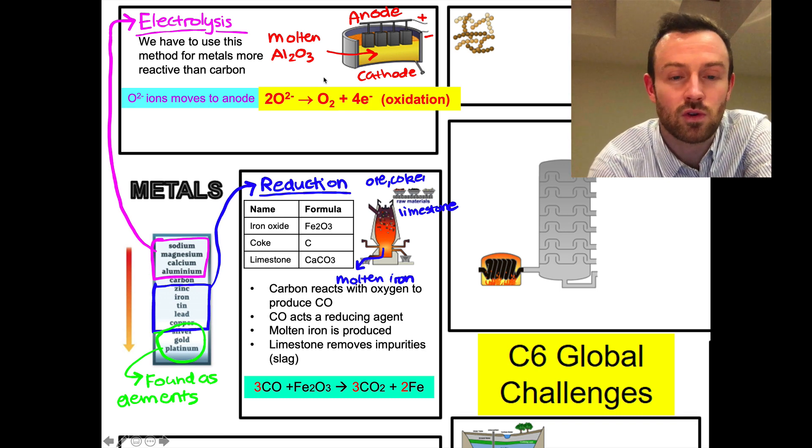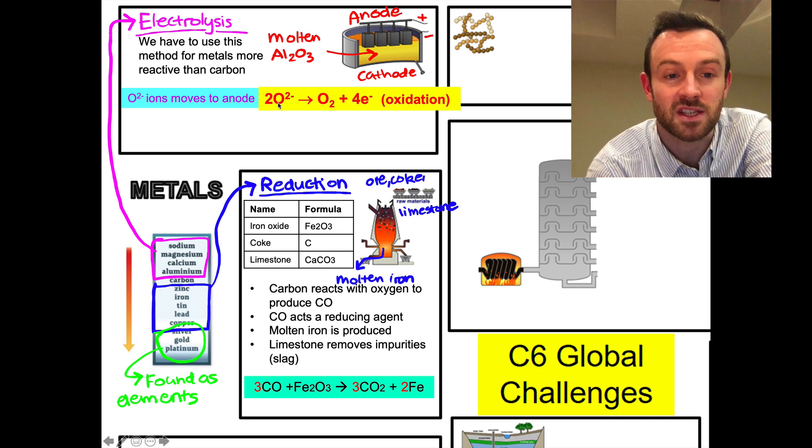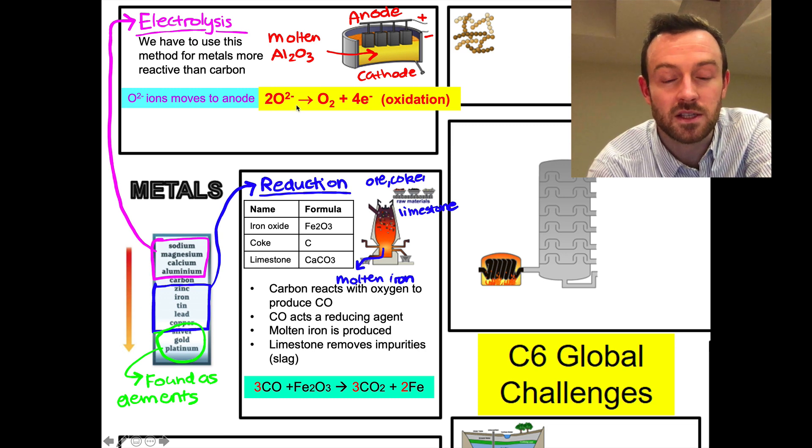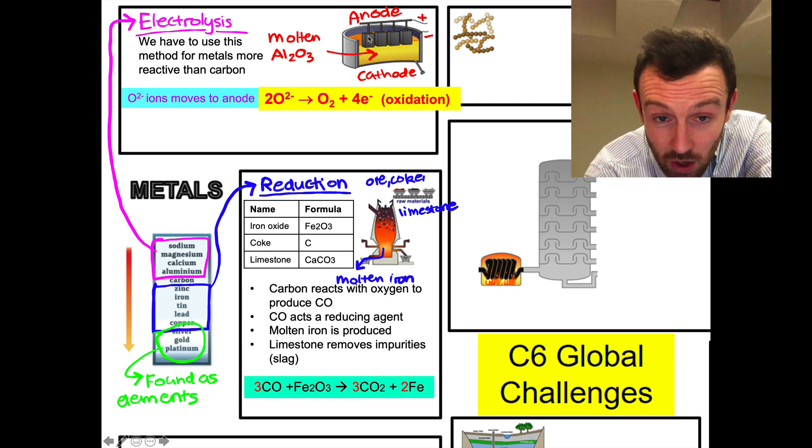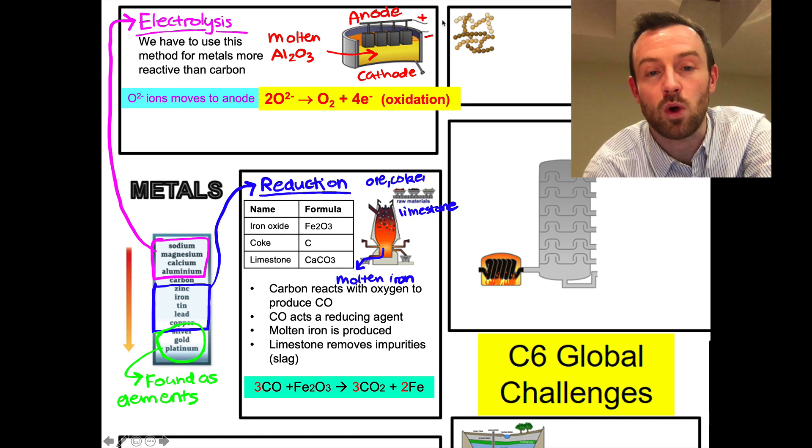We can write a half equation which is this: 2O2- goes to oxygen gas plus four electrons. Those four electrons go off into the cathode - they go into this carbon cathode. Sorry, off into the anode up there, and then they sort of go down this wire.